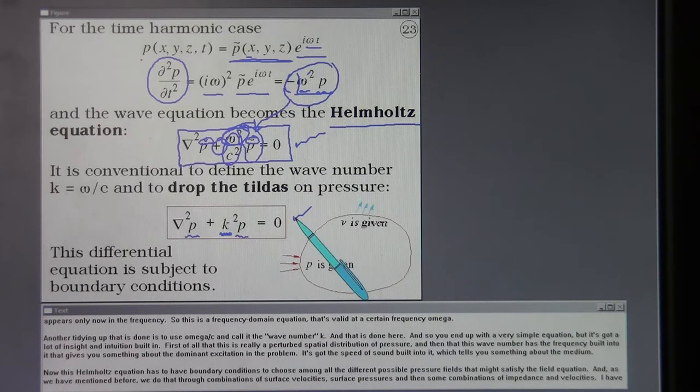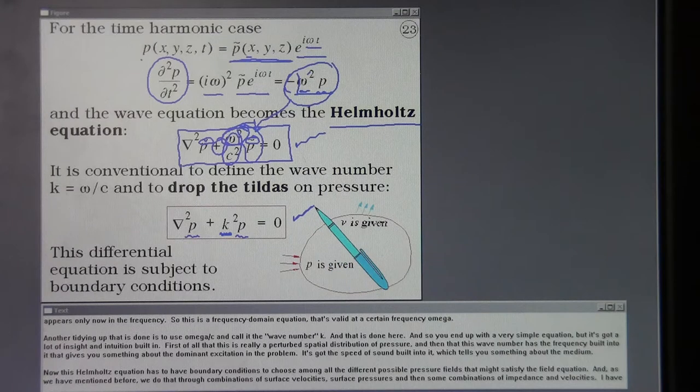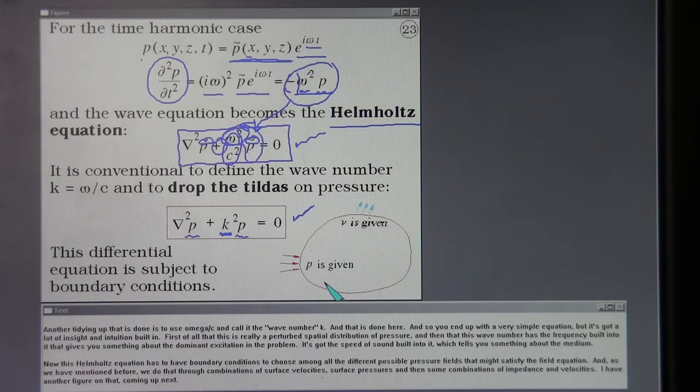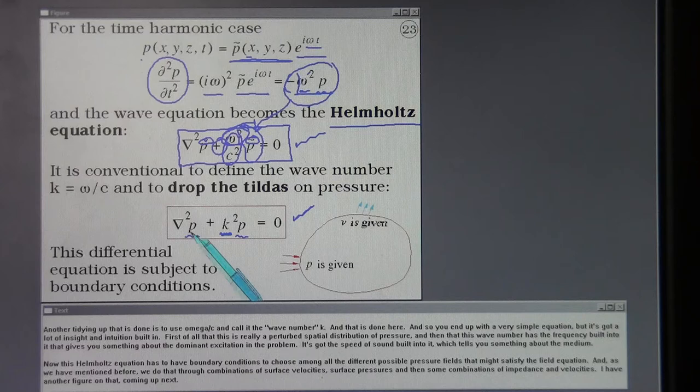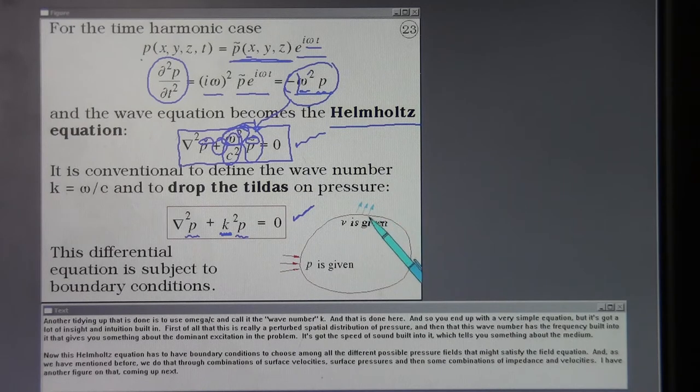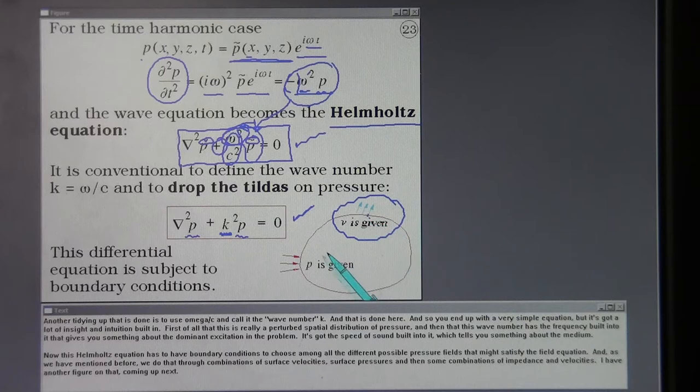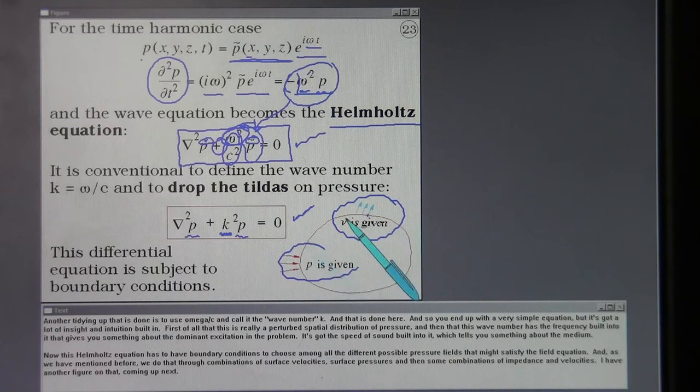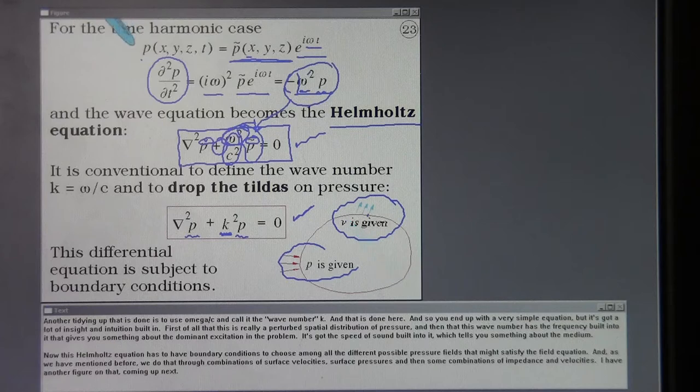Now this Helmholtz equation has to have boundary conditions to choose among all the different possible pressure fields that might satisfy the field equation. And as we've mentioned before you do that through combinations of giving surface velocities, surface pressures, and then some combinations of impedance and velocities.